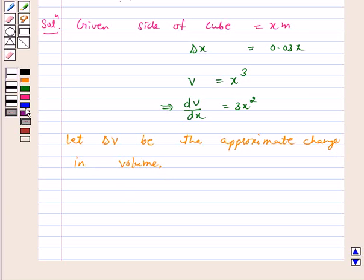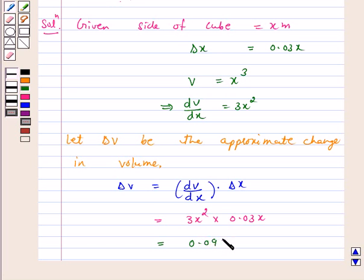Therefore, ΔV is equal to dV/dx times Δx, and this is equal to 3x² times 0.03x, which equals 0.09x³ m³.